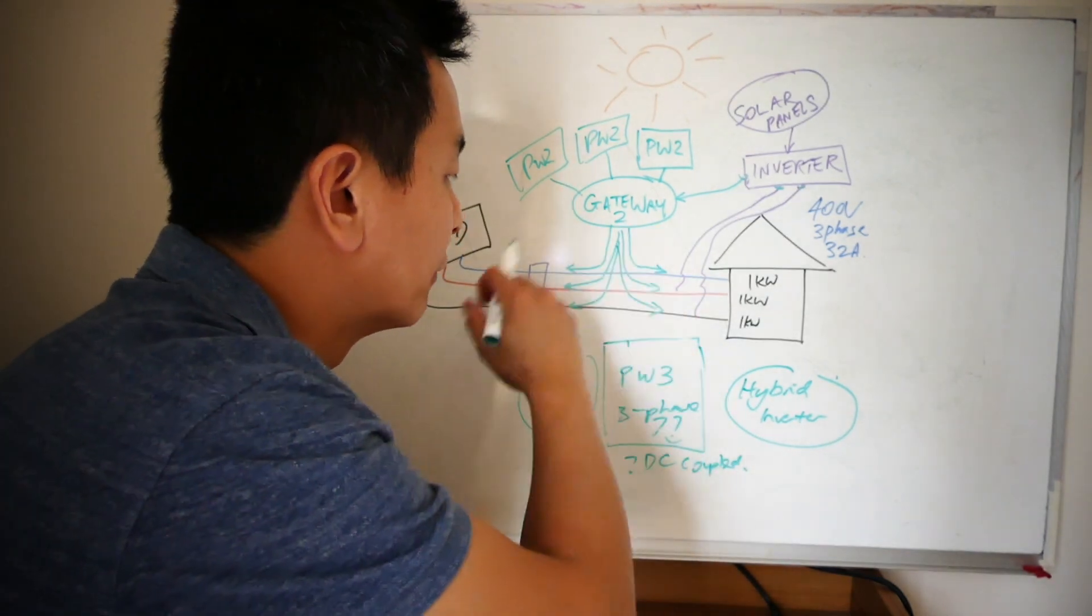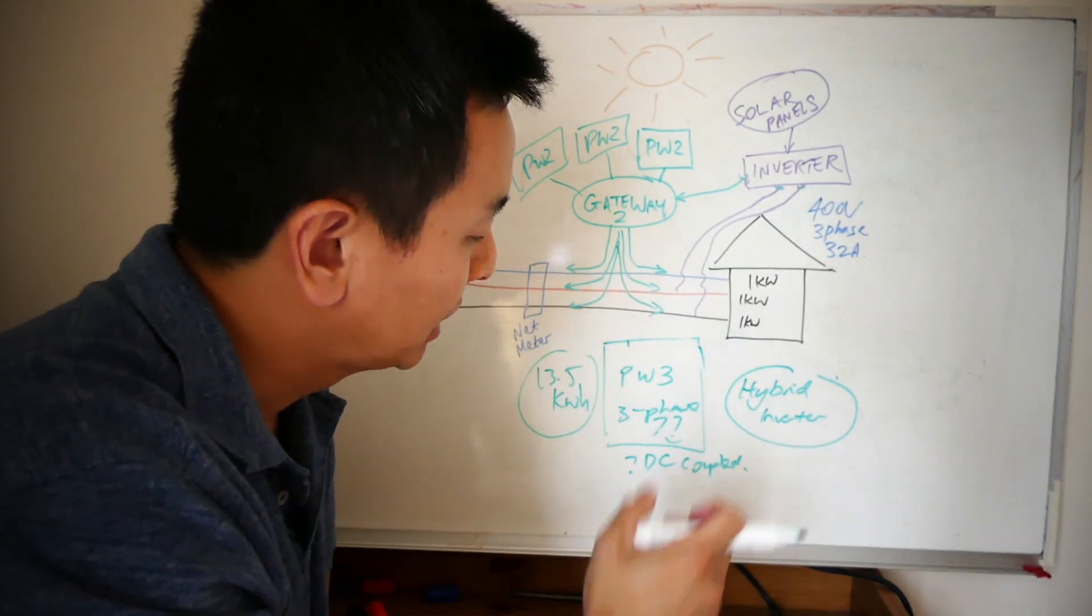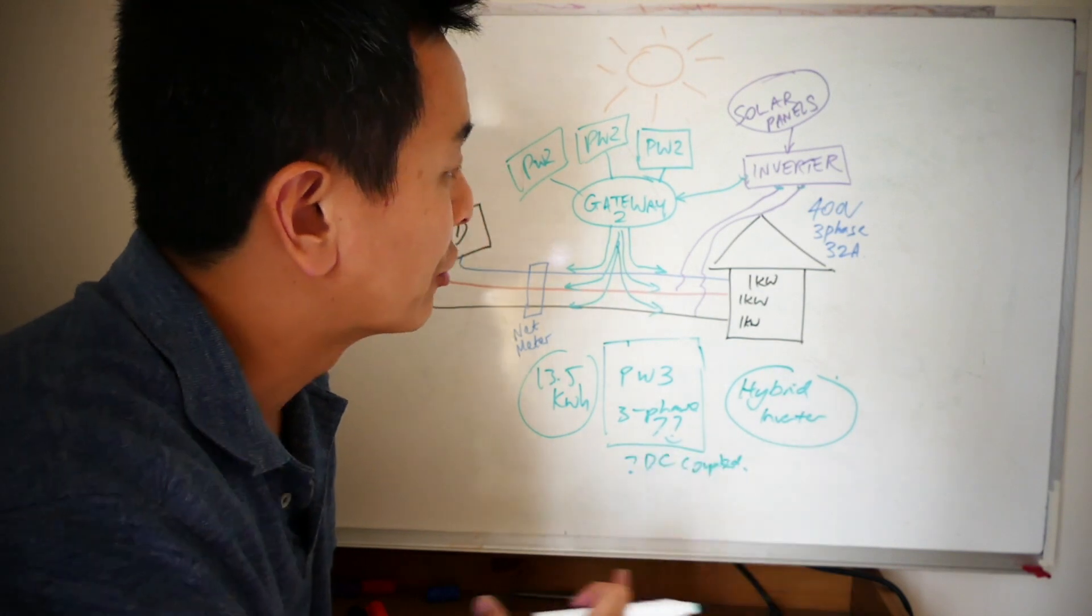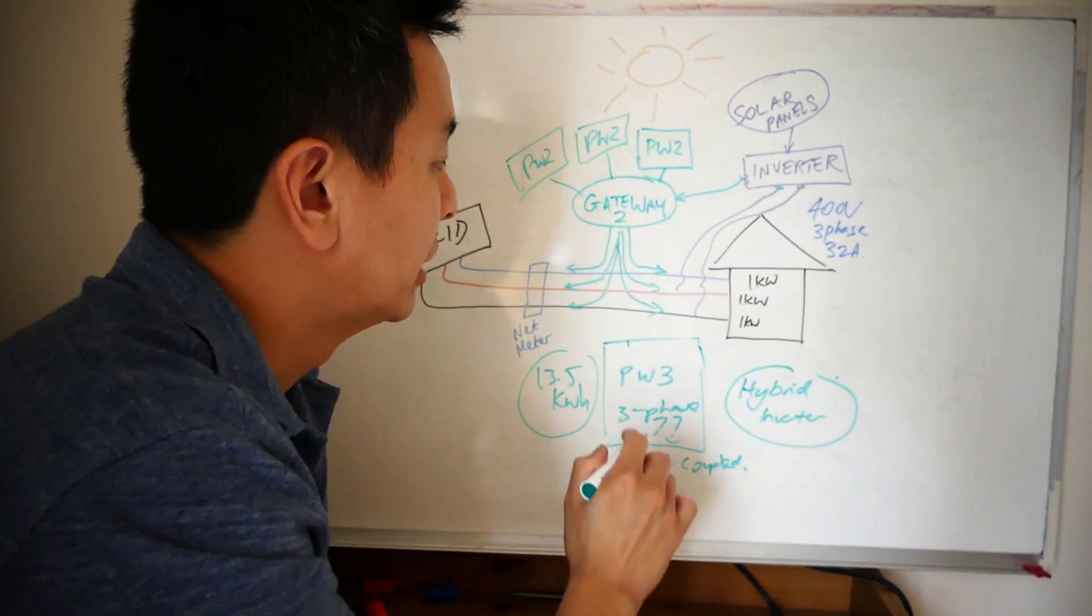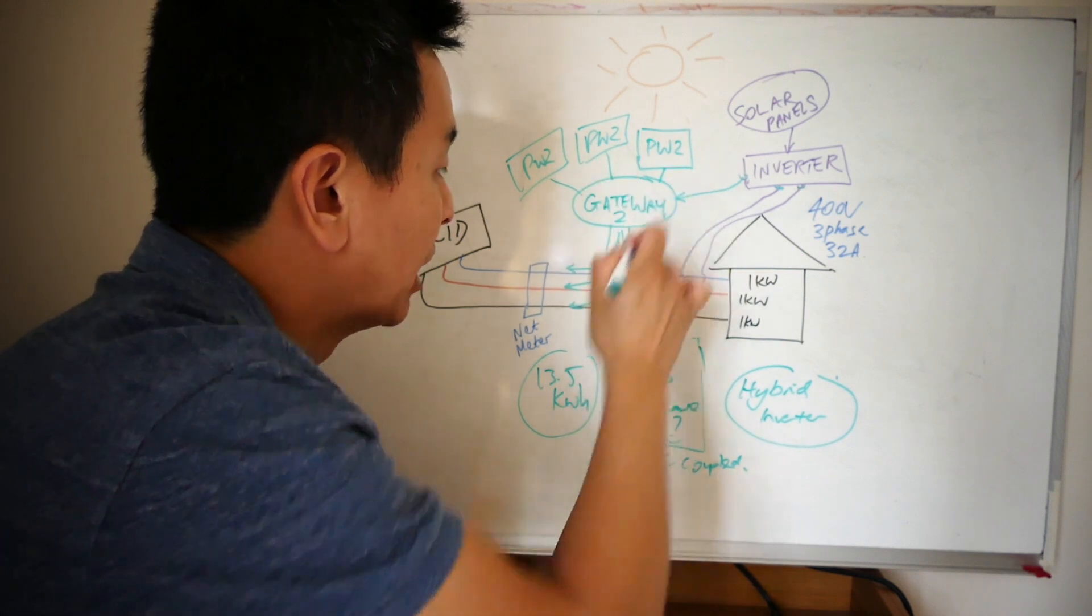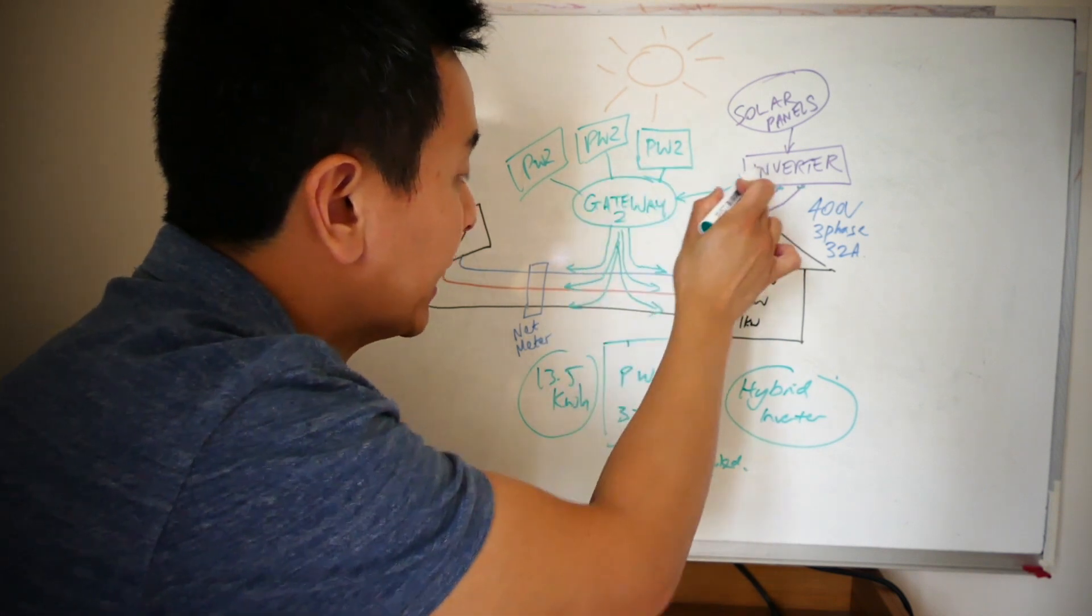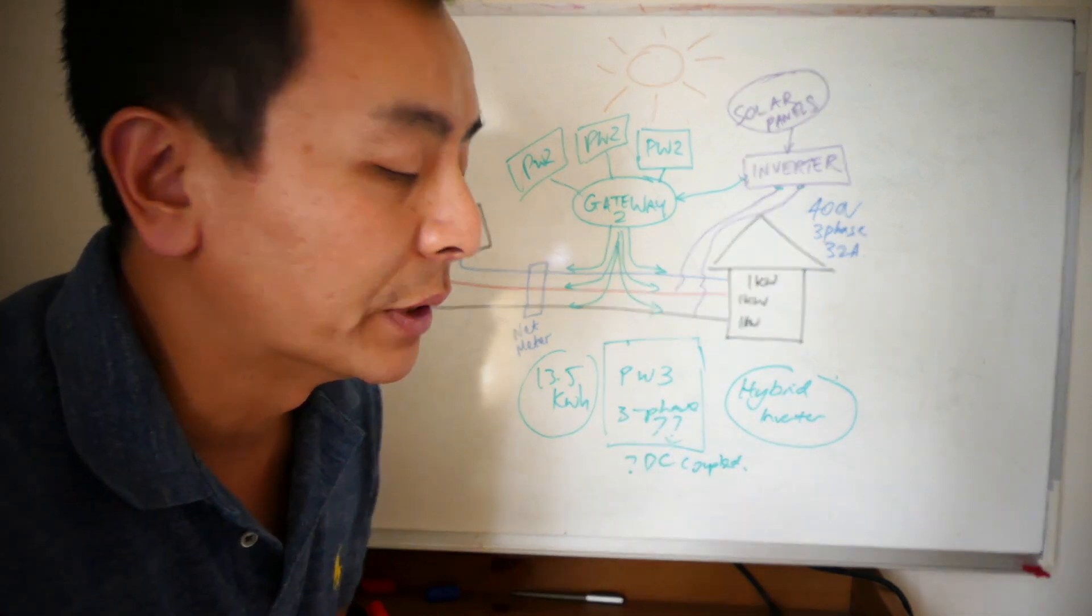So guys, that's my explanation about why it's impossible for a Powerwall 2, even a series of Powerwall 2s with a Gateway 2, to supply a three-phase solar inverter during an off-grid situation.